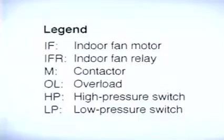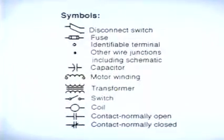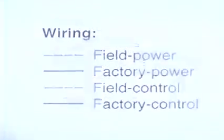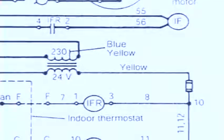The portion of the wiring diagram called the legend provides explanations for the abbreviations used in the wiring diagram. This diagram also clarifies the symbols used and the types of wiring found in the diagram. Schematic diagrams also indicate terminal numbers as they appear in the system components to help you when you're troubleshooting.